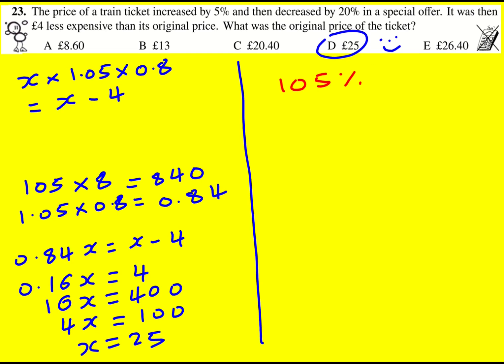I then decrease that by 20%. So if I want to find 20% of something, I can actually divide by 5. So I can do 1 fifth of 105, which is the same as dividing 105 by 5. That's going to be 21.